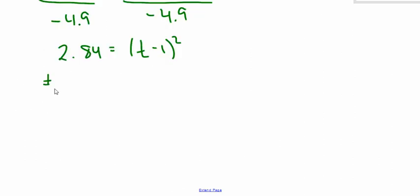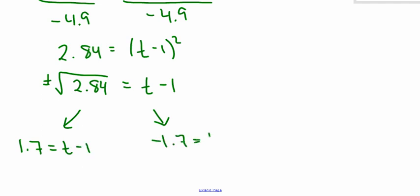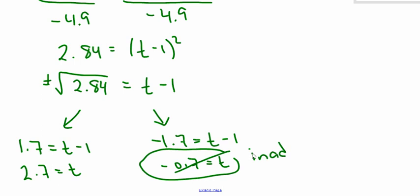It's important to remember that when you take the square root, you get two different answers. You get a positive answer and a negative answer. The square root of 2.84 is about 1.7. So I have 1.7 equals t minus 1, or negative 1.7 equals t minus 1. If I add 1, I get 2.7. If I add 1, I get negative 0.7. This is obviously inadmissible because time doesn't go backwards. So the ball hits the ground in 2.7 seconds.